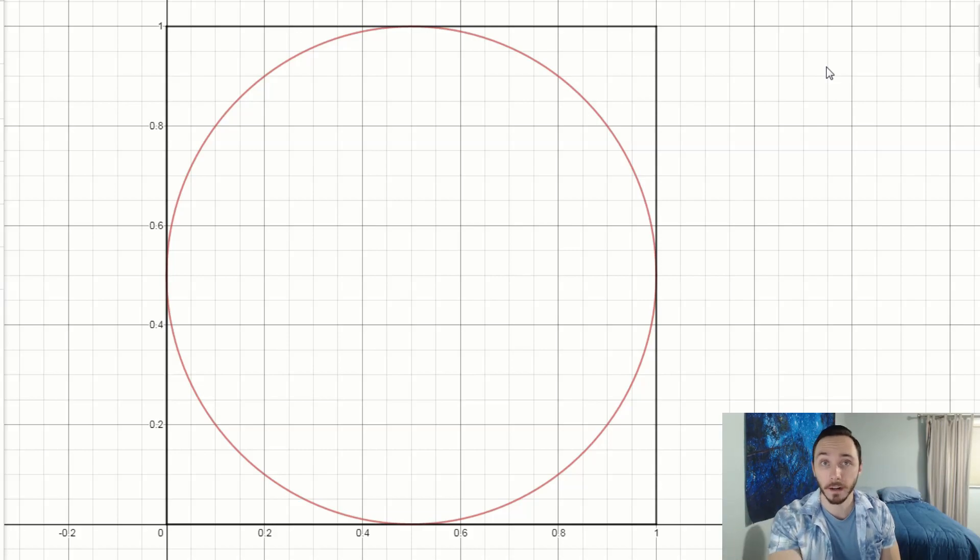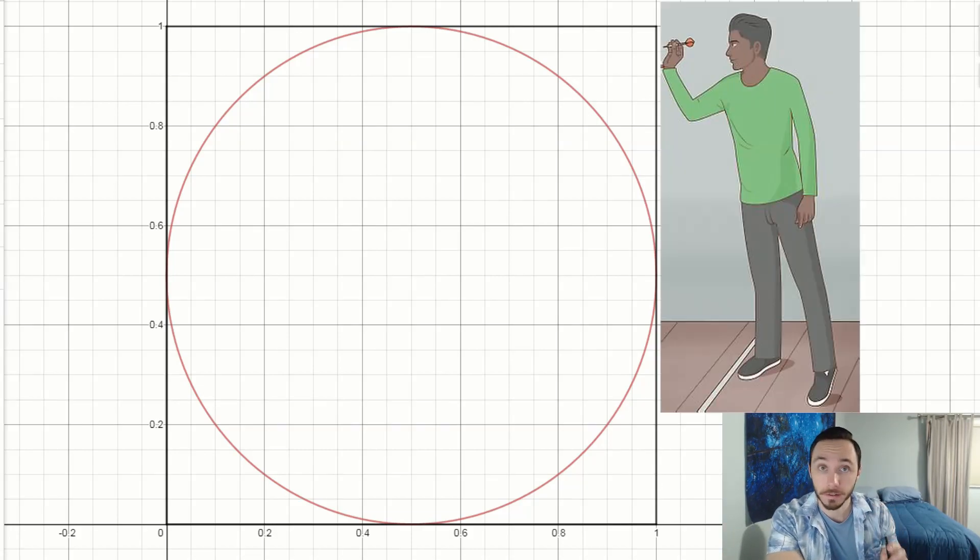Let's set the scene for Monte Carlo method. Imagine you're throwing darts at this one by one blackboard. Anything outside this black box is a miss. You're really good at darts. You never miss this one by one square. You're always hitting within the square.